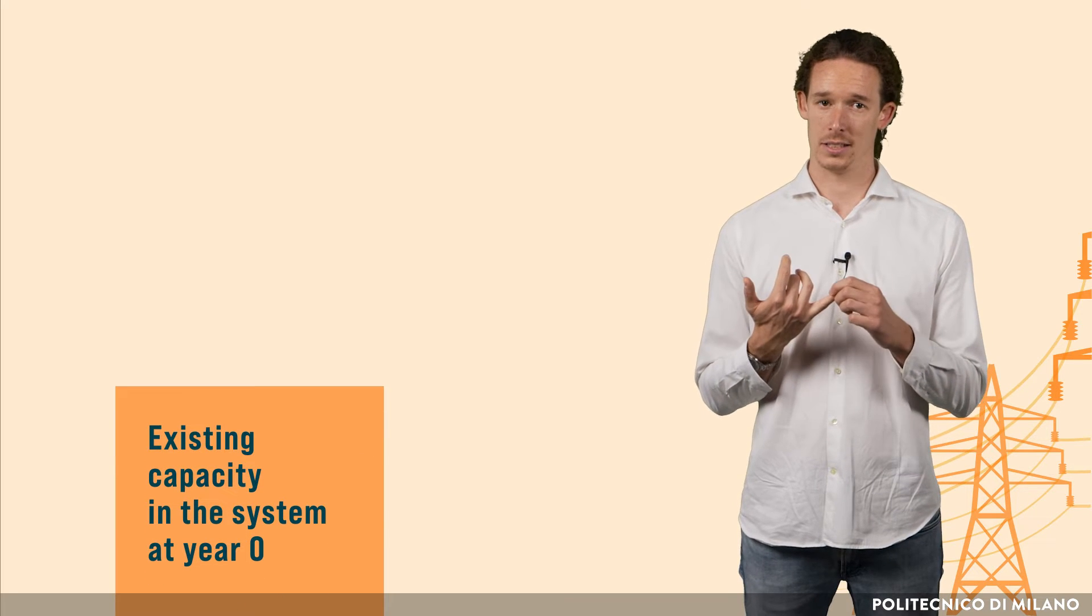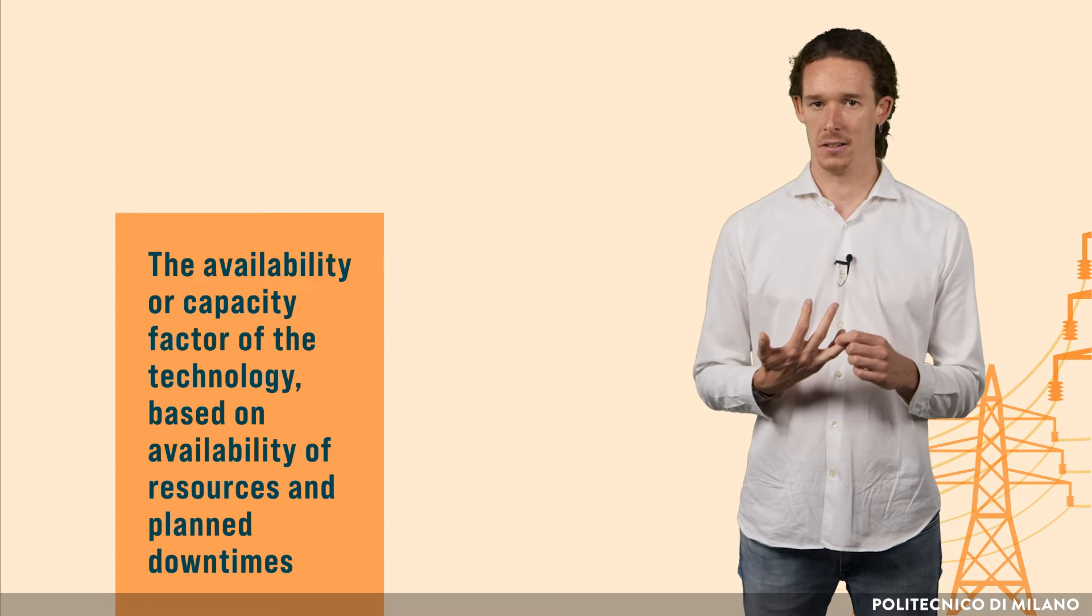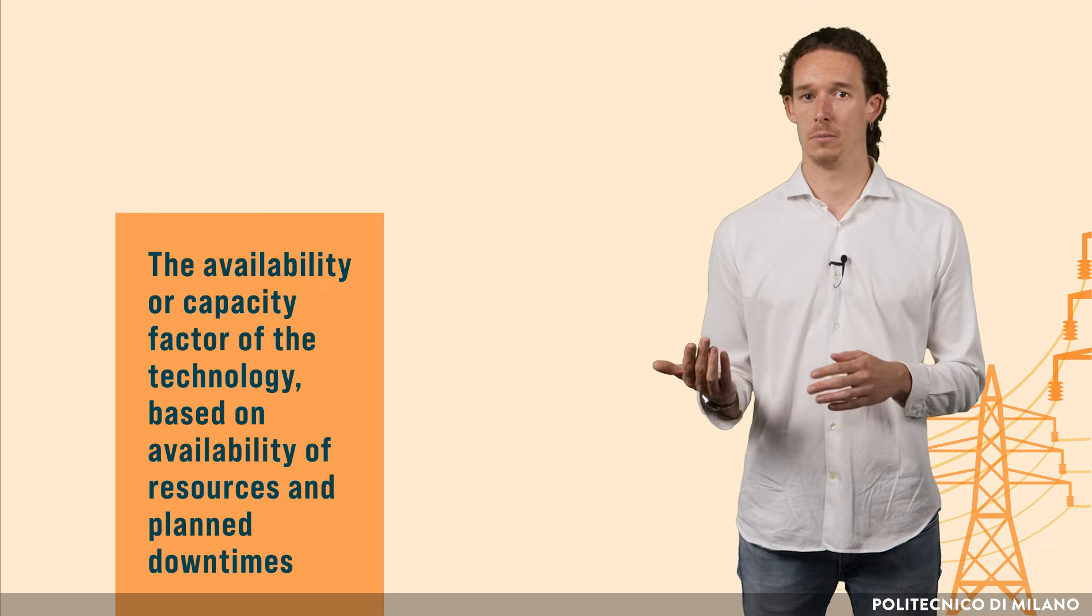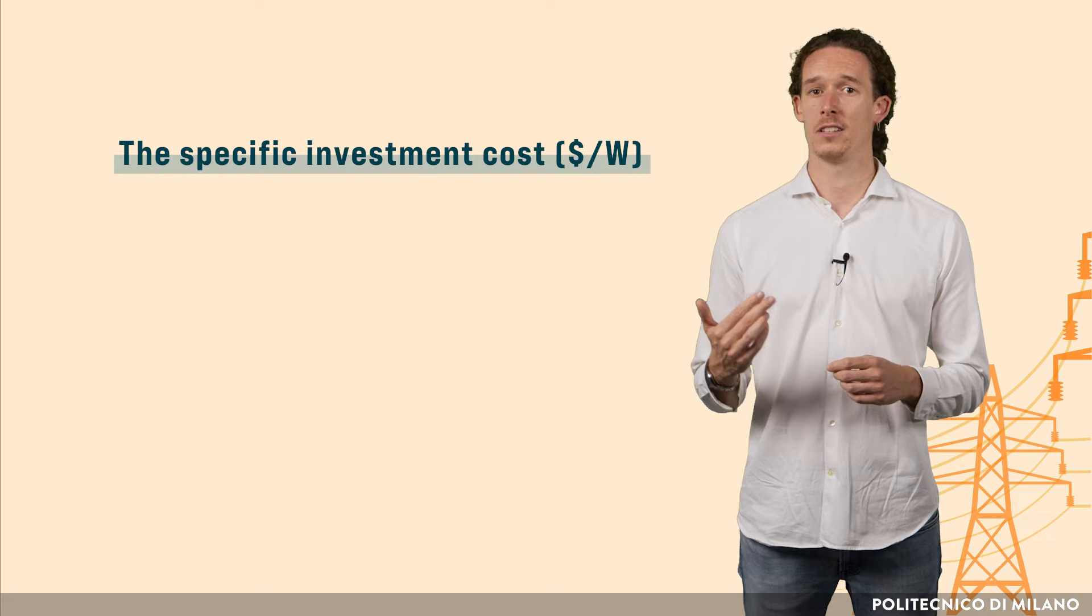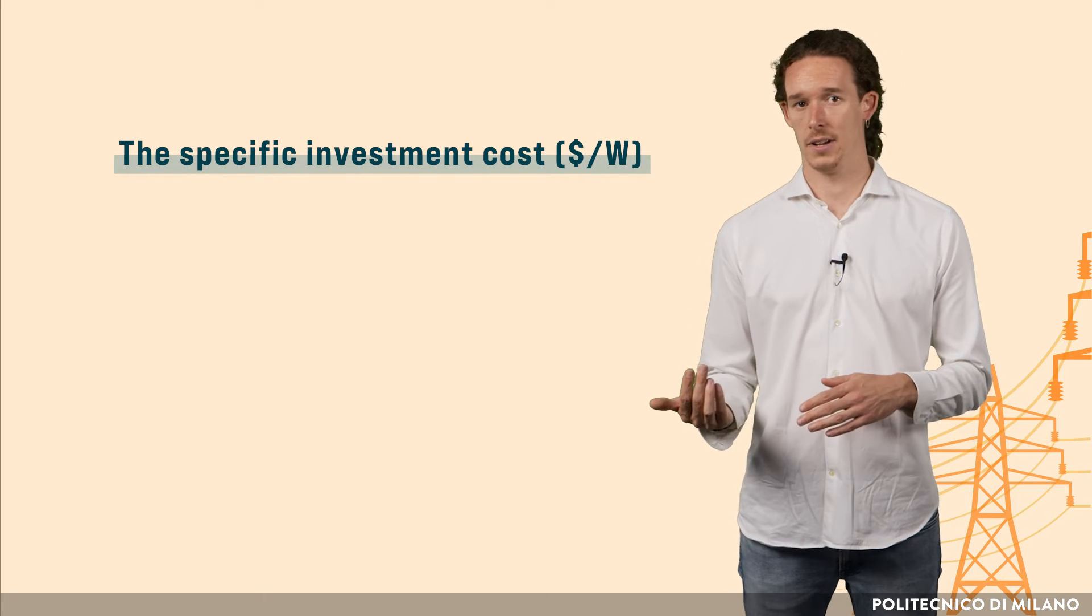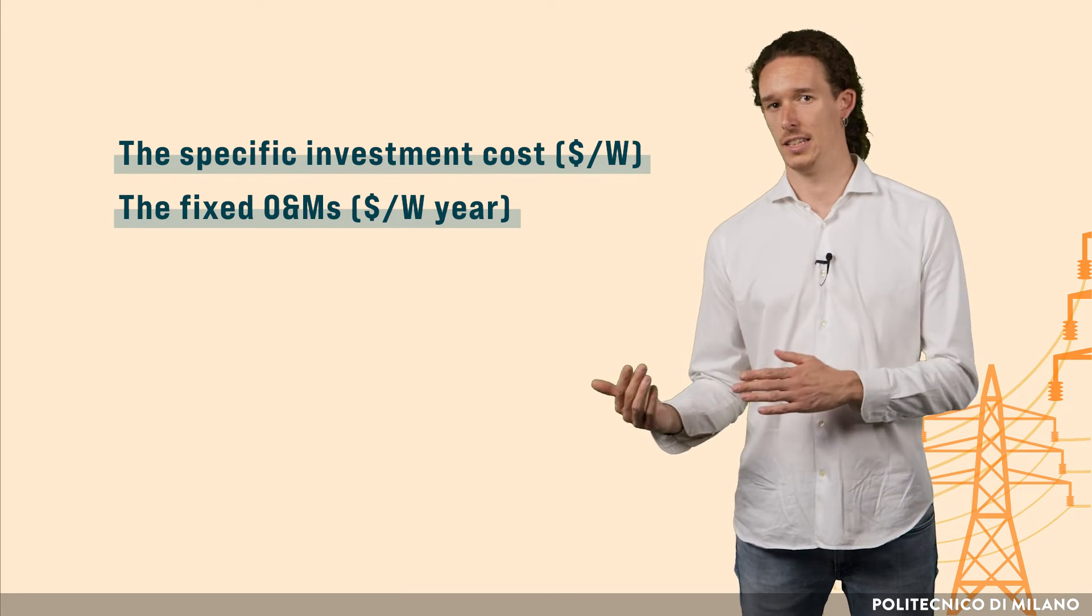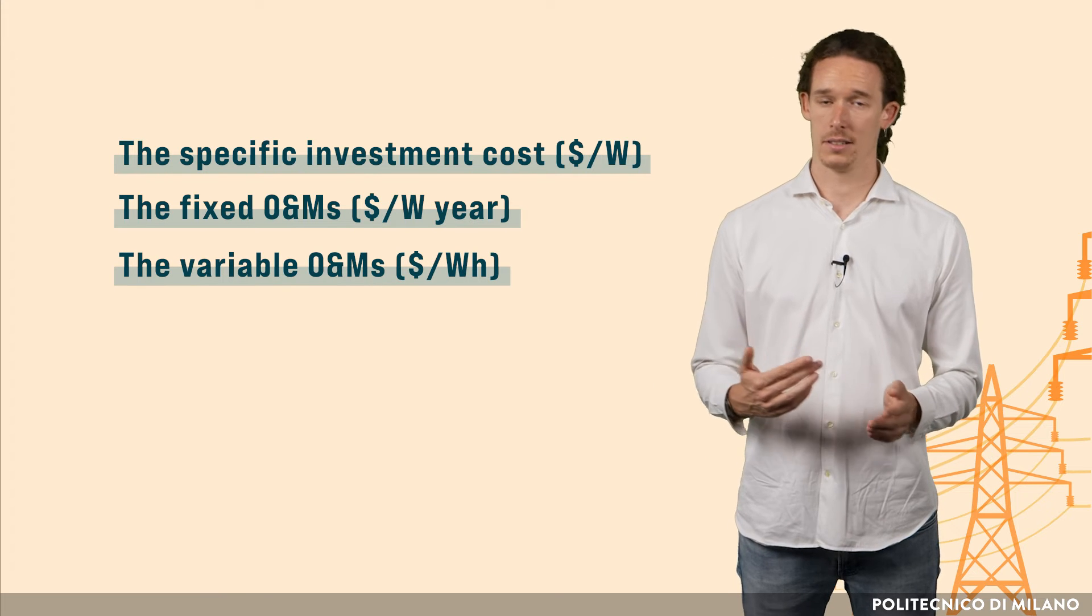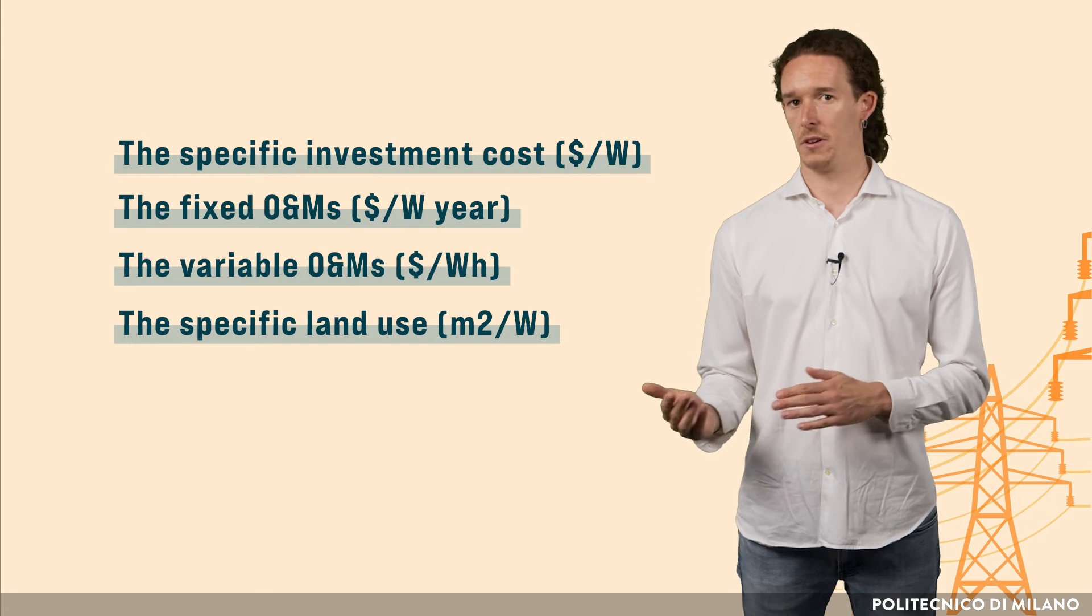Existing capacity in the system at year zero. The availability and or capacity factor of the technology, based on availability of resources and planned downtimes. The efficiency of the different technologies. The specific investment cost in dollars per watt. The fixed O&Ms in dollars per watt year. The variable O&Ms in dollars per watt hour. And the specific land use in squared meters per watt.